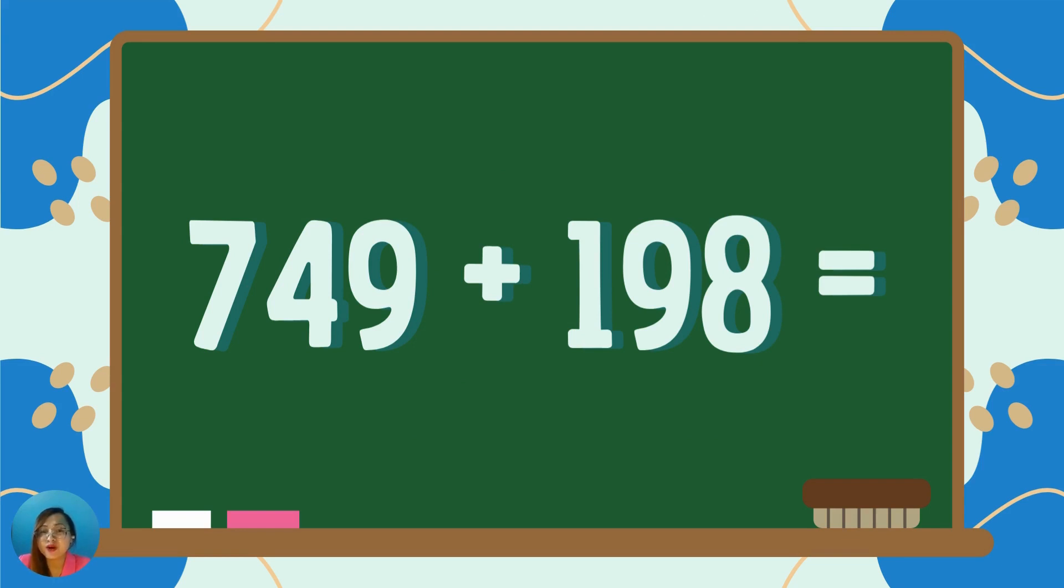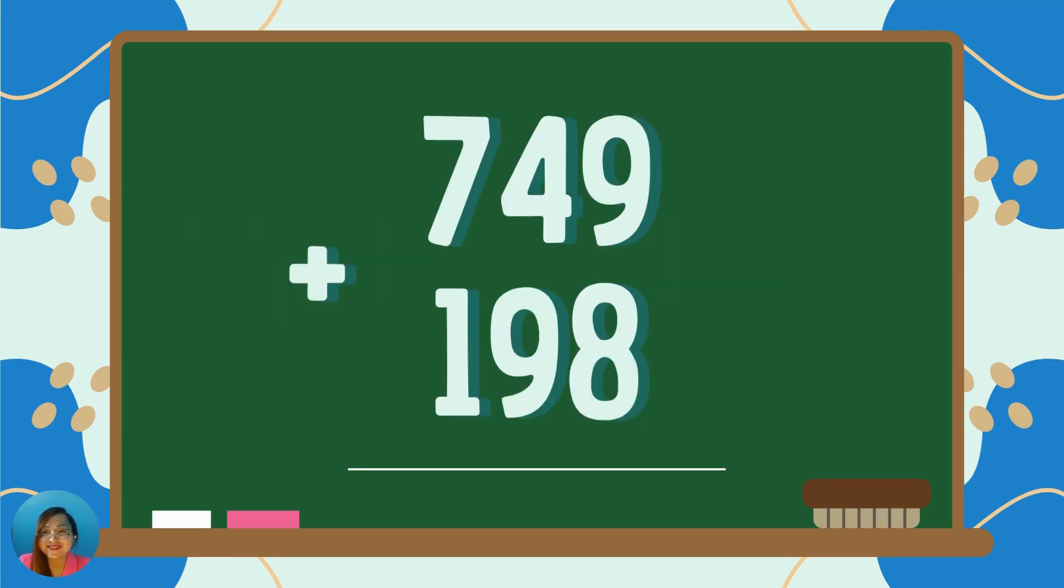749 plus 198 is equal to... First, all you gotta do is to align this in a vertical position. 749 plus 198 is equal to...